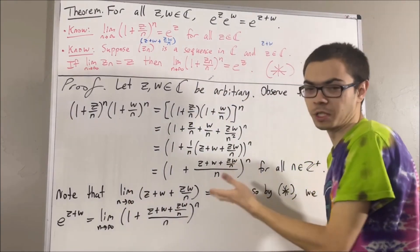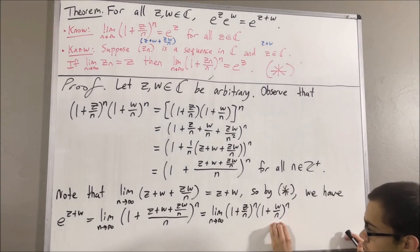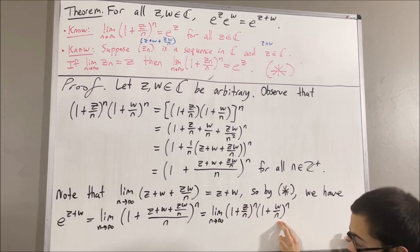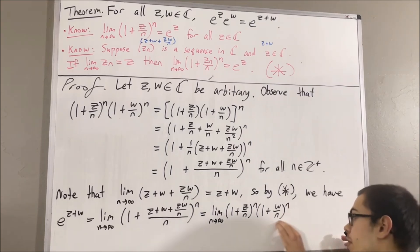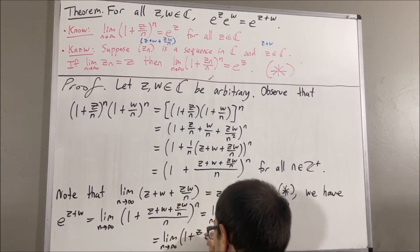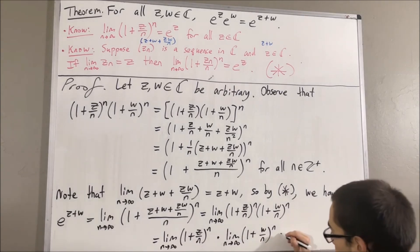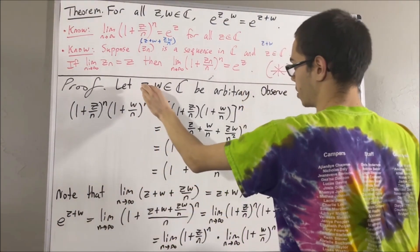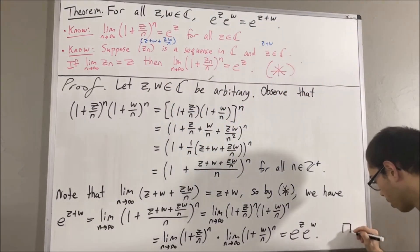But what is the limit of this sequence? We know that the sequence (1 plus z over n) to the n converges to e to the z, and the sequence (1 plus w over n) to the n converges to e to the w. From the multiplication property of limits, the limit of the product sequence equals e to the z times e to the w. So we have shown that e to the z times e to the w is equal to e to the z plus w for arbitrary complex numbers z and w, which is exactly what we wanted to show. So this completes the proof.